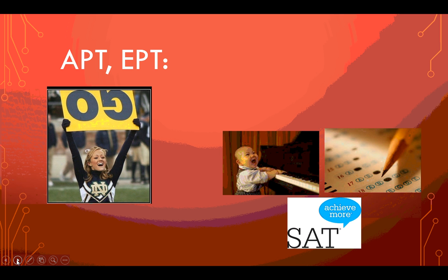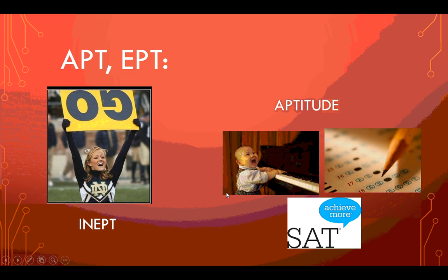Next root: apt and ept. First, let's look at a word that uses two roots. In, as in incorrect, means not. So somebody is not apt. Notice this cheerleader is holding the go sign upside down — she's enthusiastic but not holding the sign the right way. When someone's inept at something, that means they're not particularly good or skilled at it. Our other word is aptitude. If this baby could actually play Beethoven, we would say he had an amazing aptitude for music.